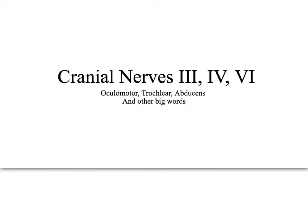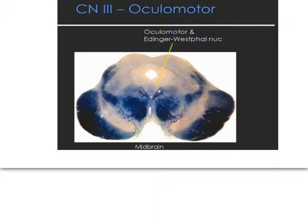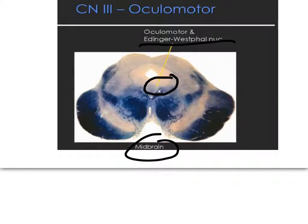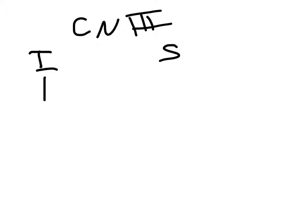Now let's move on to cranial nerves that innervate eye movement. Cranial nerve 3 is found in the midbrain, located in the same area as the Edinger-Westphal nucleus. The oculomotor nucleus and the Edinger-Westphal nucleus are right next to each other, both work with muscles in the eye, and they travel together making up cranial nerve 3. Cranial nerve 3 has two divisions: inferior and superior. The inferior division is all ipsilateral, innervating the inferior oblique, inferior rectus, and medial rectus.